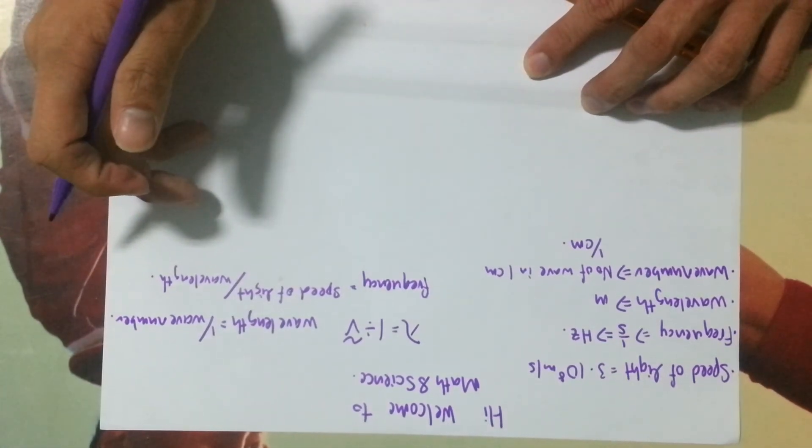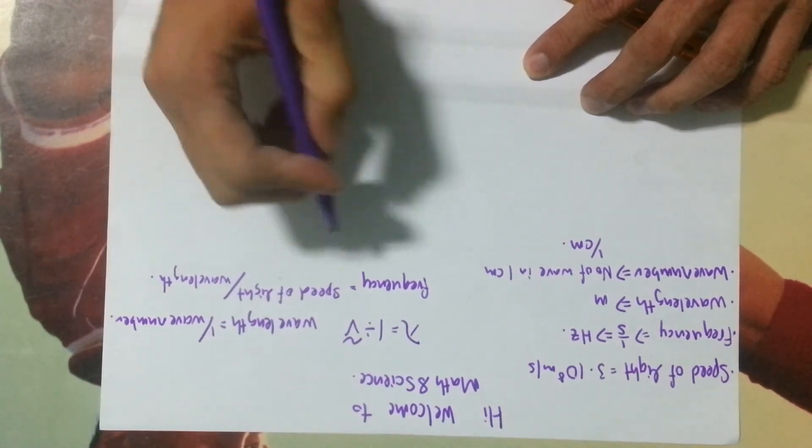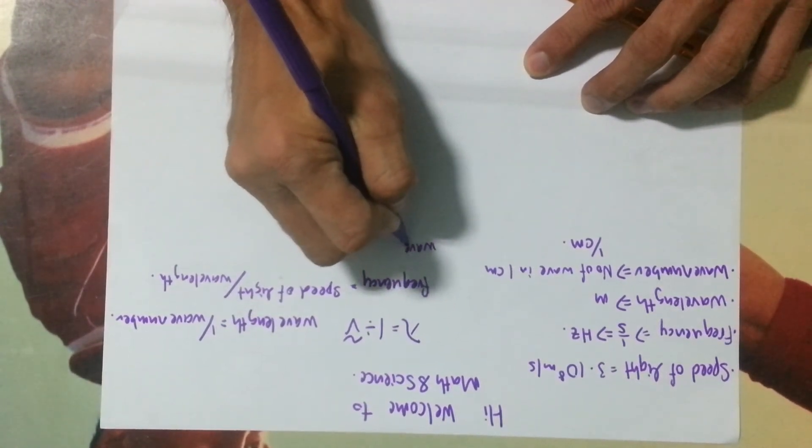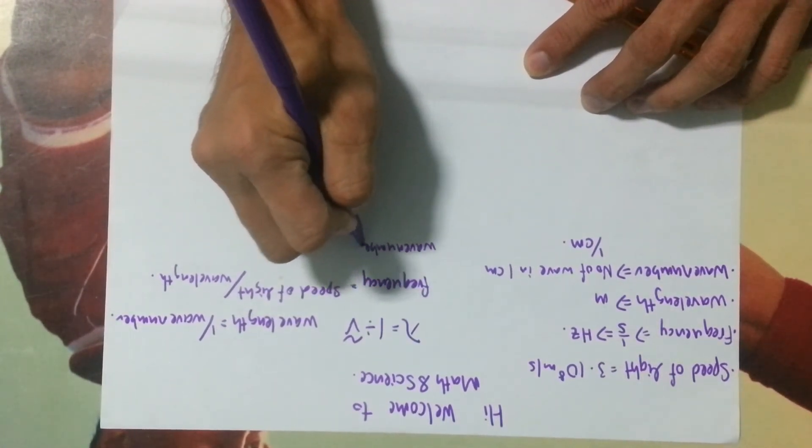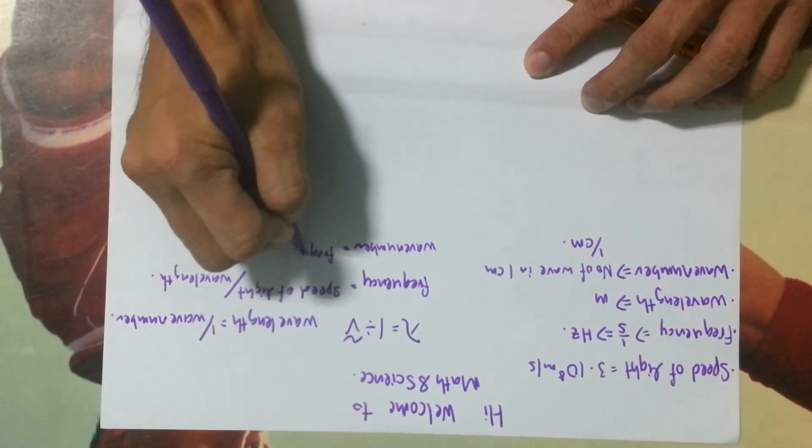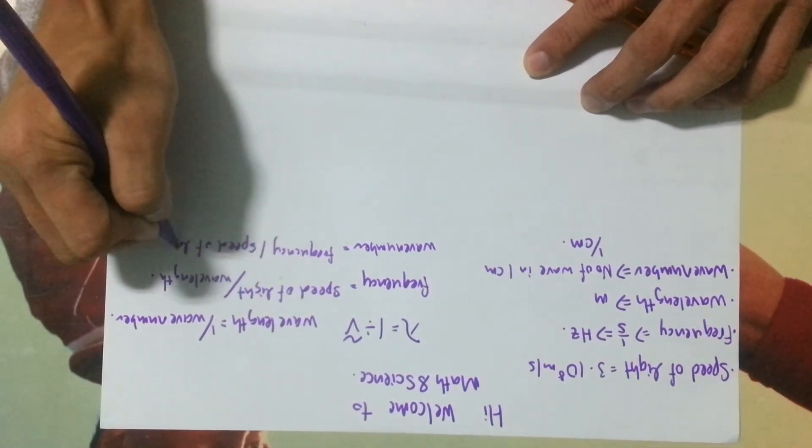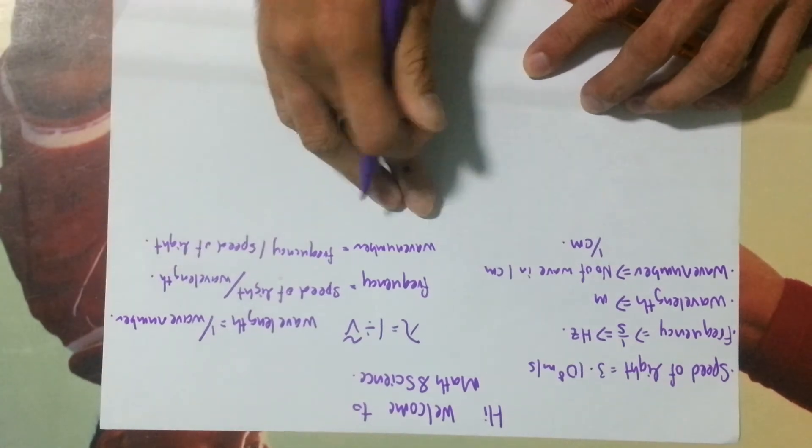So, what's the relationship between wave number, frequency, and speed of light? Wave number equals frequency divided by speed of light. And you got your wave number.